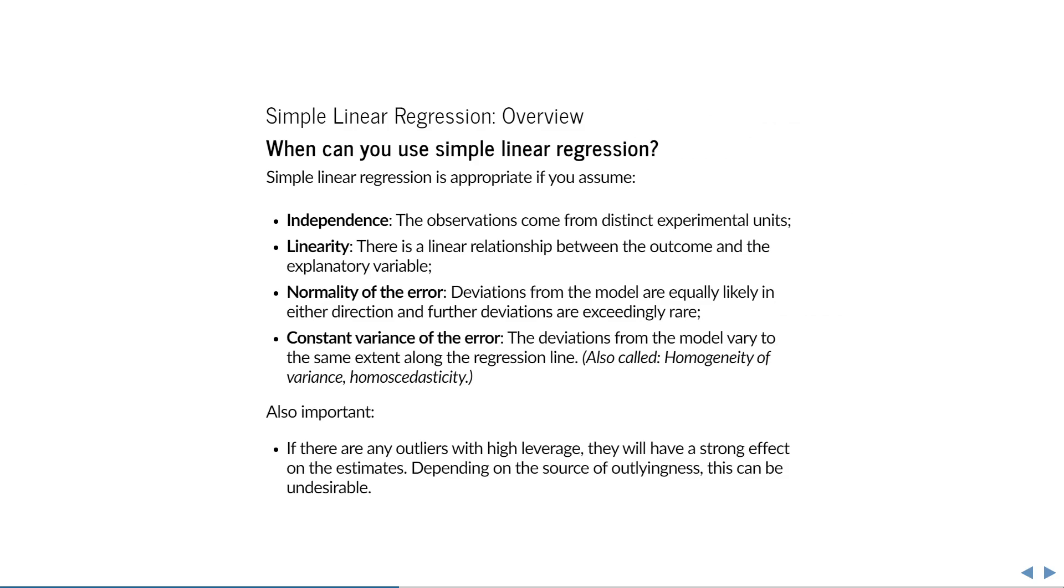Like most statistical methods, simple linear regression is only appropriate under certain assumptions about the data generating process. These are in descending order of importance: the measurements are independent, there is indeed a linear relationship between the two variables, the error in the equation y equals intercept plus slope times x plus error comes from a normal distribution, and the variance of this error is more or less the same anywhere along the regression line. This last assumption is by the way also called homogeneity of variance or homoscedasticity, which might come in handy if you read literature about this subject.